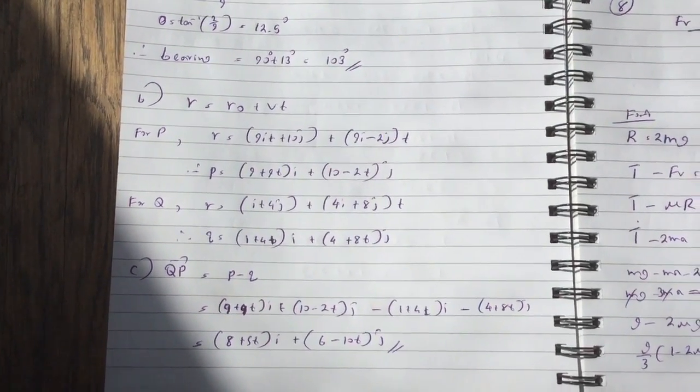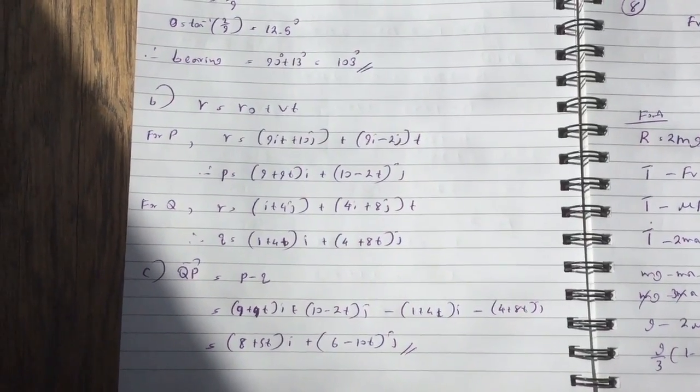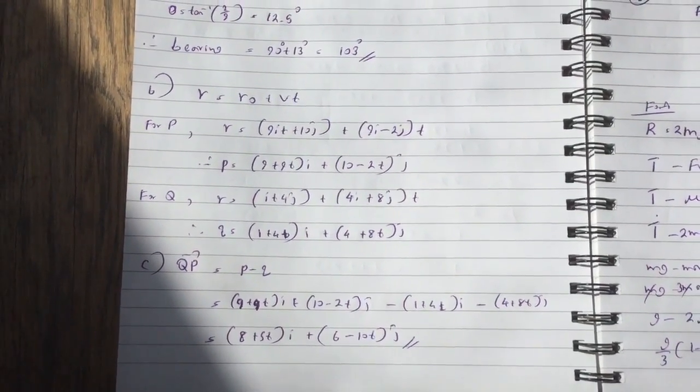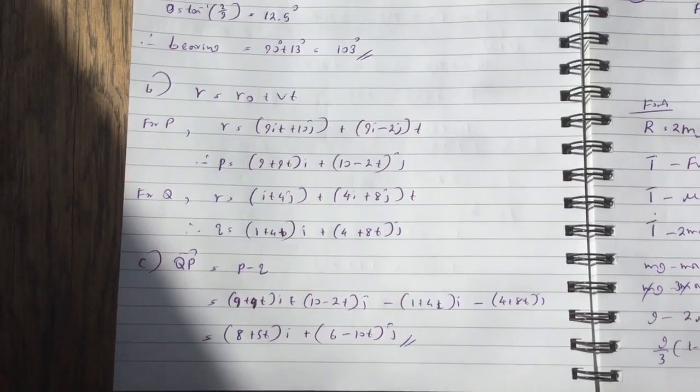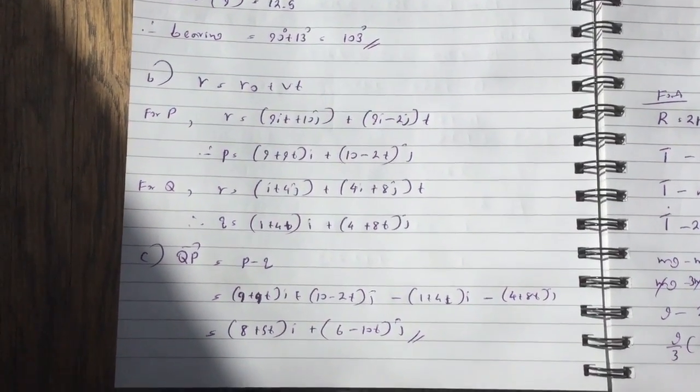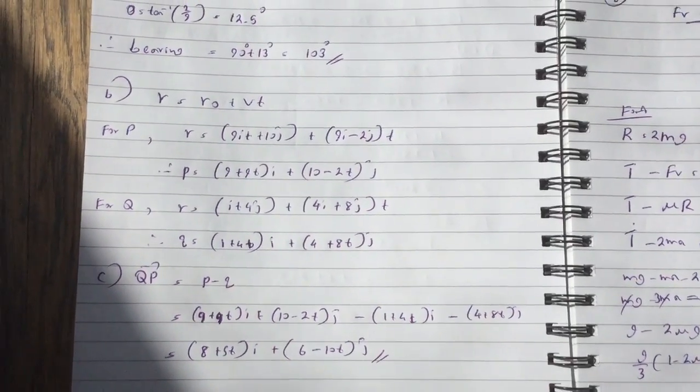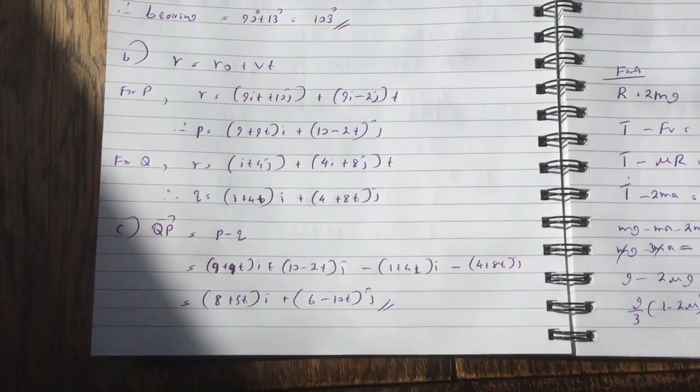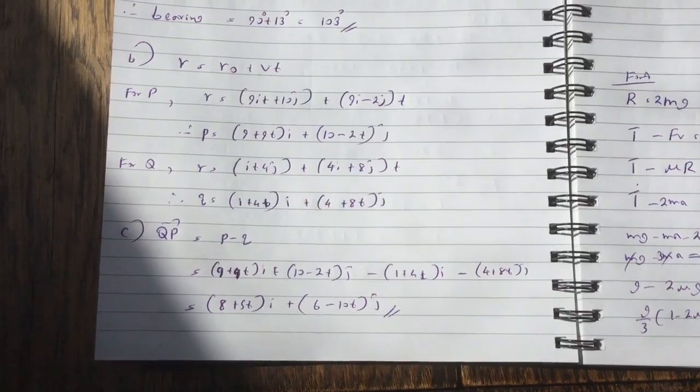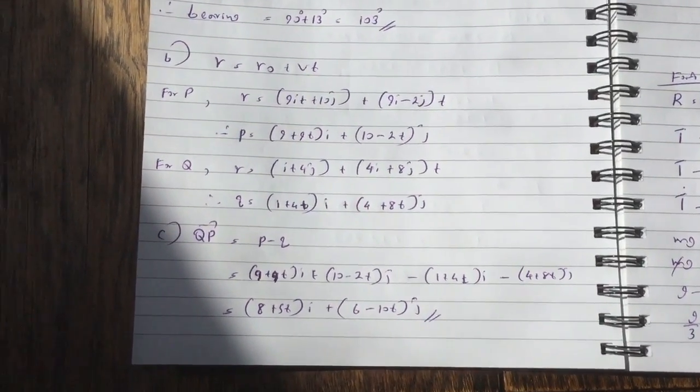And for Q, 1 plus 4ti plus 4 plus 8tj. I mean I'm sure if you write the first two equations you'd still probably get the marks. So you don't have to simplify and combine the two i's and two j's together. So QP is P minus Q. And then you just subtract those and you get this here.